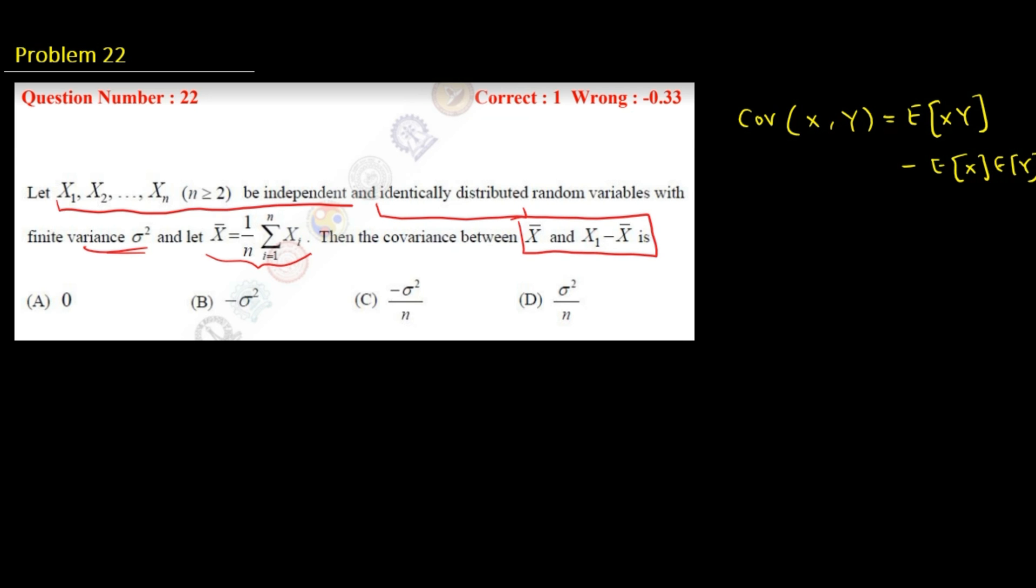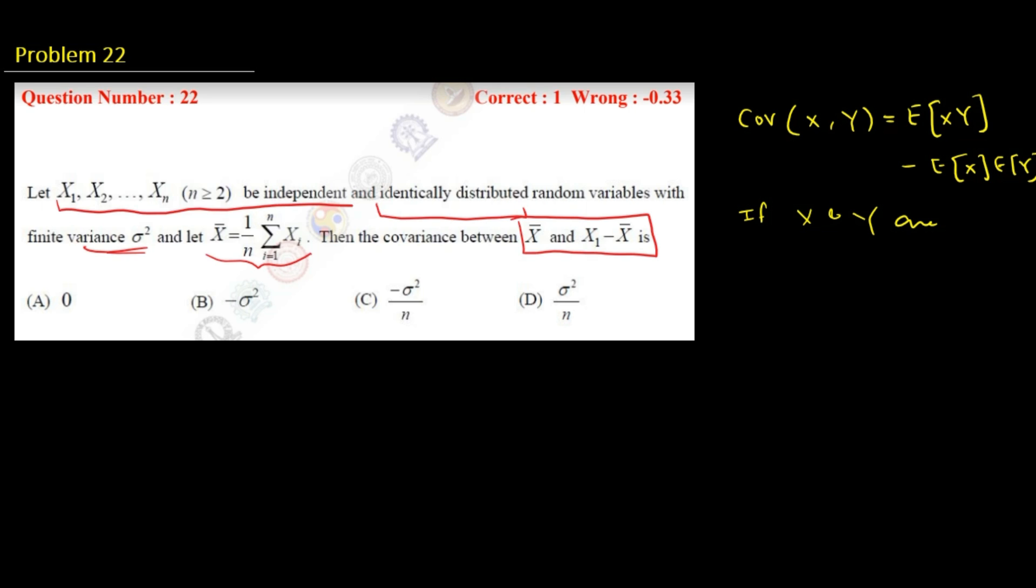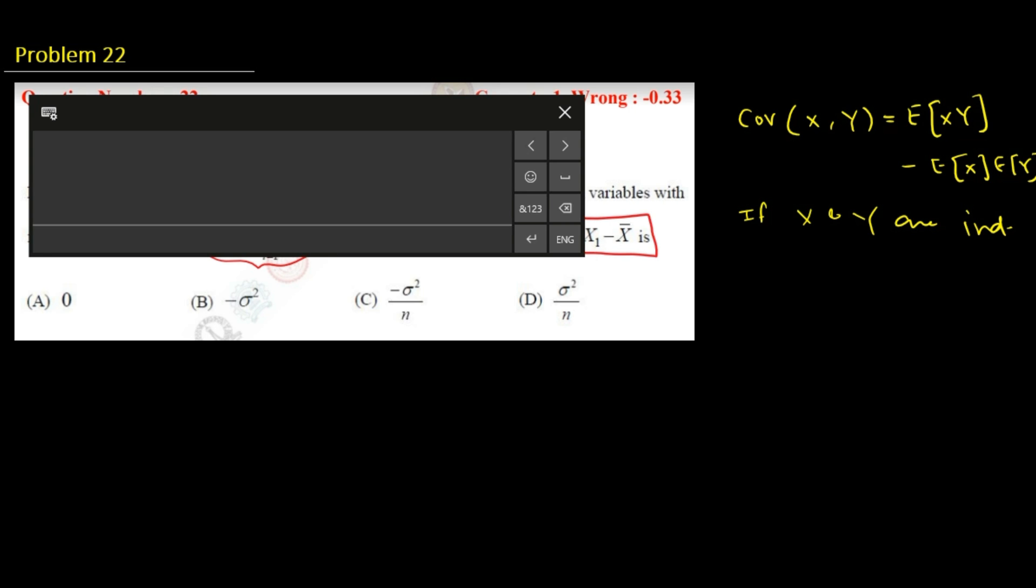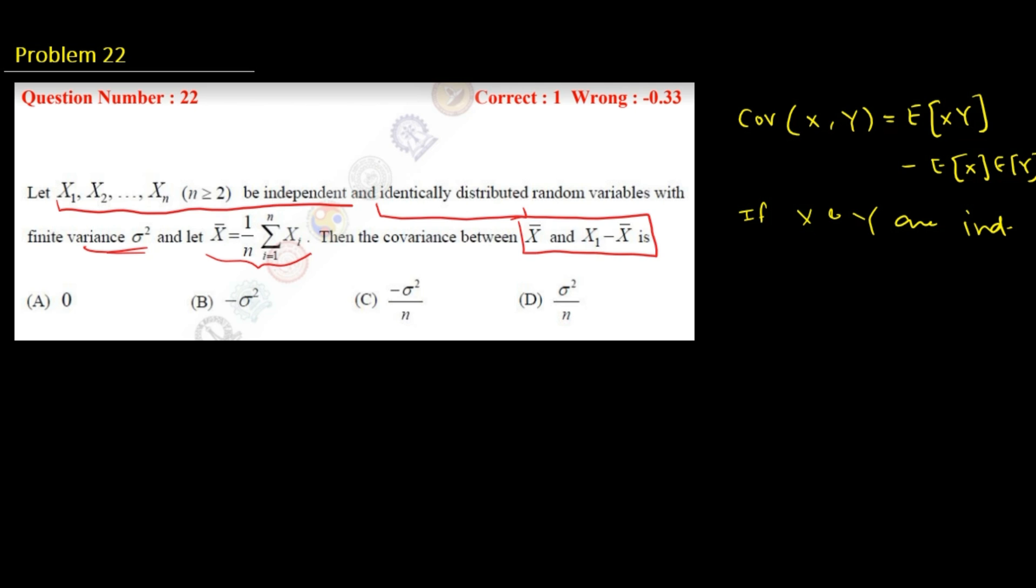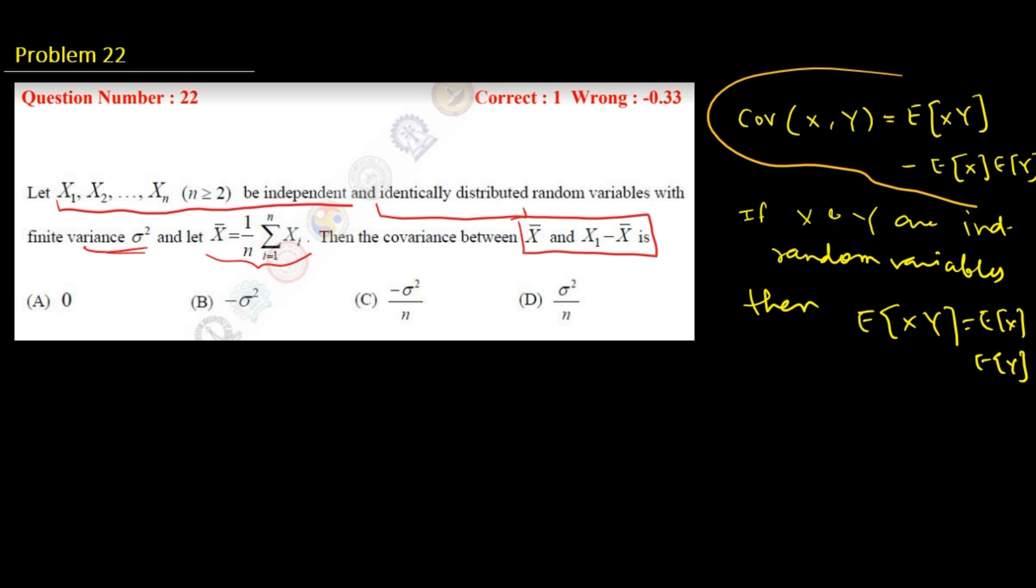So if x and y are independent random variables, then expectation of xy is same as expectation of x times expectation of y. So that means the covariance of two independent random variables will be 0.